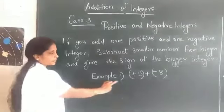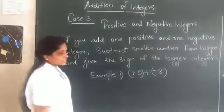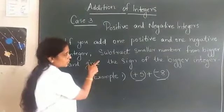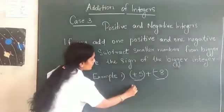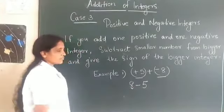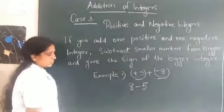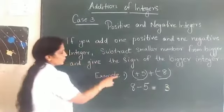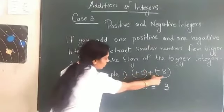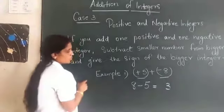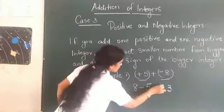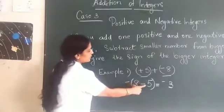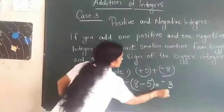Let us do one example: positive 5 plus negative 8. Here, one positive number and one negative integer. So you should remember the rule — subtract the smaller from the bigger. Smaller is 5, bigger number is 8. So we will subtract smaller from bigger and get 3. Then you look at the symbol — the symbol of the bigger number is negative. So what symbol is here? We will put negative. So the answer is negative 3.